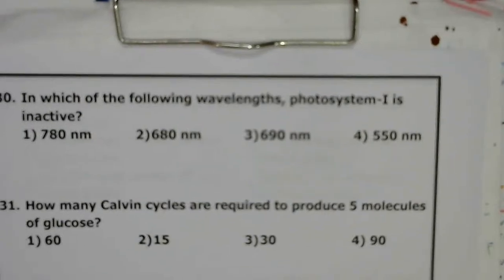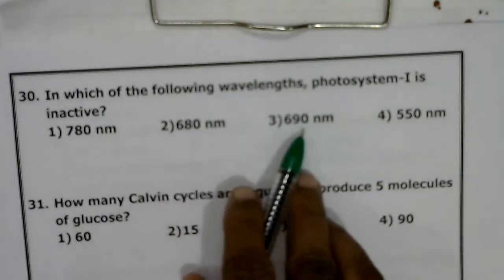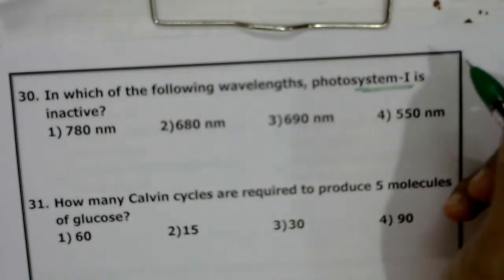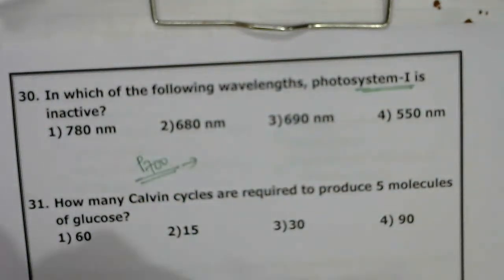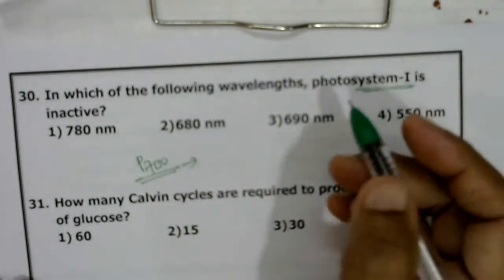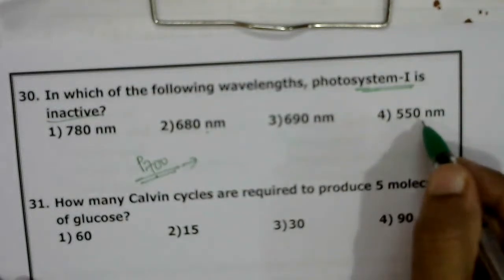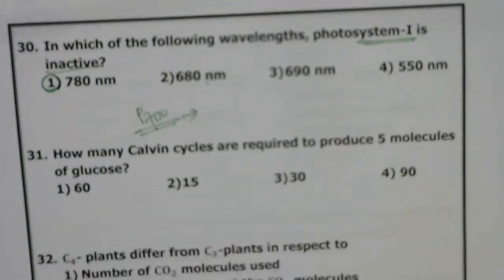At which wavelength is Photosystem 1 inactive: 780nm, 680nm, 690nm, or 550nm? The reaction center of PS1 is P700, meaning it absorbs light maximally at 700nm. It can receive light at 680nm, 690nm, and 550nm, but it will be inactive at 780nm. Correct answer: first option, 780nm.